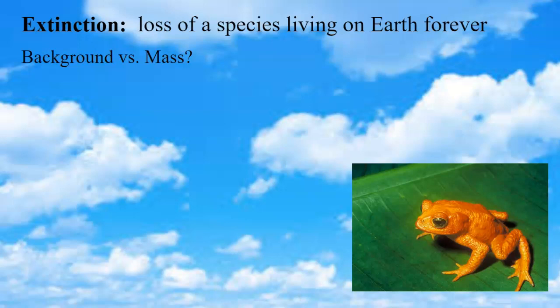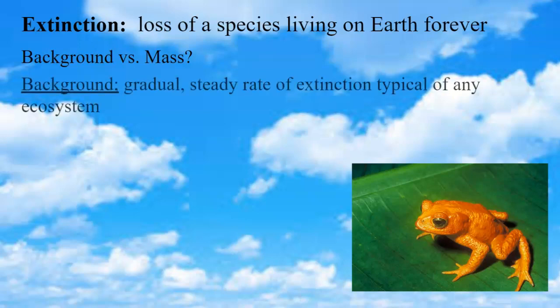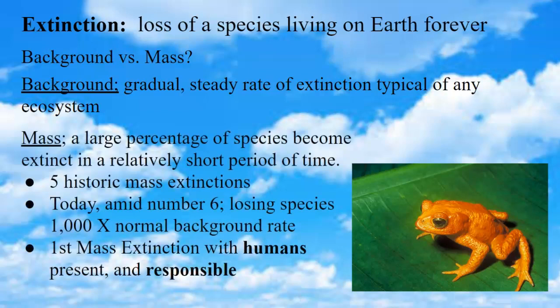Mass extinction, on the other hand, is defined as when 90 or 95 percent of all the species that existed on Earth have died off — a large percentage of species becoming extinct in a relatively short period of time, thinking in geologic time. The fossil record gives us clues to five historic mass extinctions, one of which led to the extinction of the dinosaurs 65 million years ago.